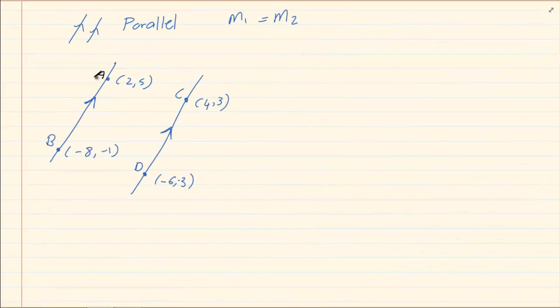Now with gradients there's certain rules. If I give you two gradients that are parallel, the rule is m1 is equal to m2. Now how would this help you? If I say prove that line AB is parallel to line CD, then what you got to do is you need to get the gradient of AB and you need to get the gradient of CD. If the gradients are equal then they are parallel.